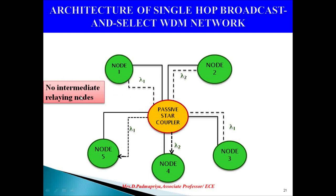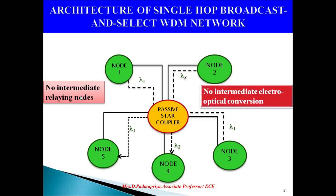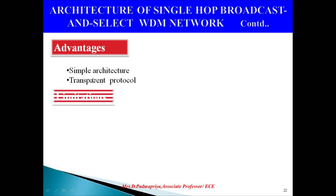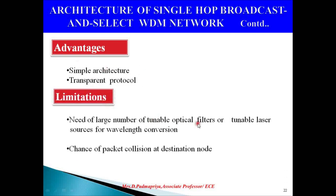No intermediate electro-optical conversion is needed in single hop. Though the architecture is simple, if a transmitter sends at a fixed wavelength the intended receiver must be informed so it can tune its selective filter to that wavelength. The advantages of single hop broadcast and select WDM network are that the architecture is very simple and the protocol is transparent. Limitations include the need for a large number of tunable optical filters for wavelength conversion, and the chance of packet collision at the destination node.